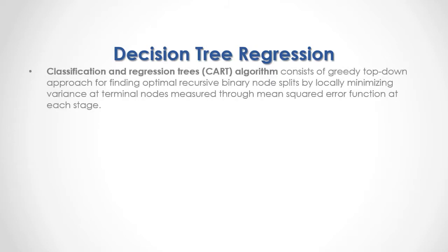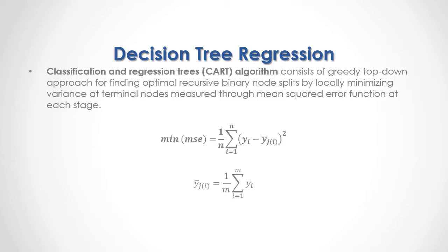The Classification and Regression Trees algorithm consists of a greedy top-down approach for finding optimal recursive binary node splits by locally minimizing variance at terminal nodes, measured through the mean square error function at each stage. The MSE equals 1 divided by n (number of observations) multiplied by the sum of the squared difference between output target feature data and the terminal node output target feature mean. That mean equals 1 divided by m (observations within the terminal node) multiplied by the sum of the corresponding output target feature data.